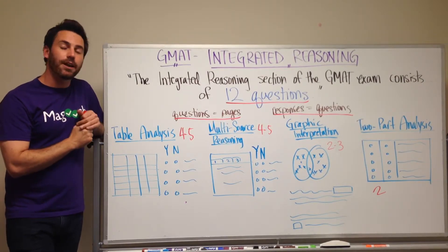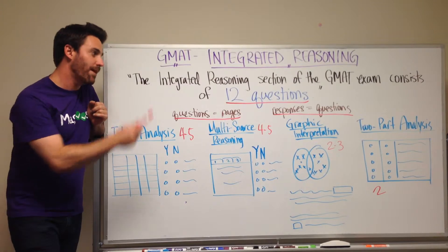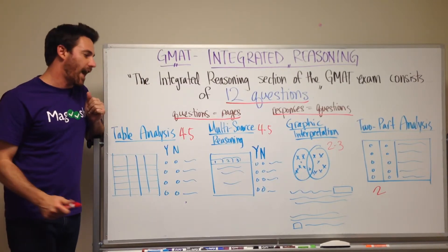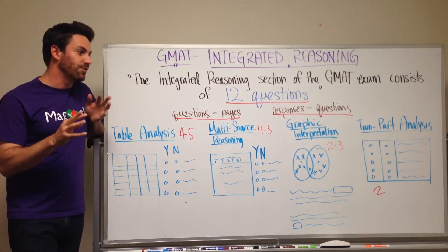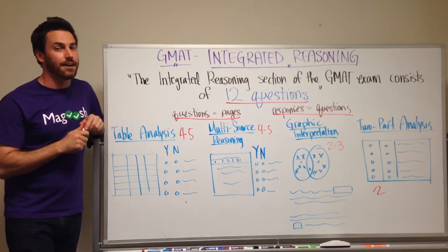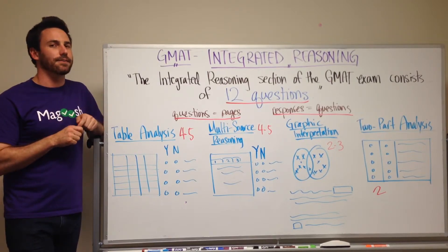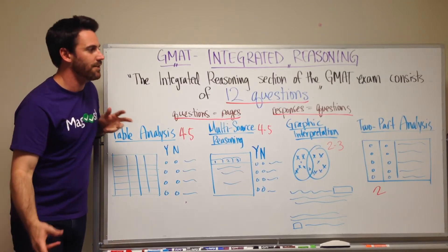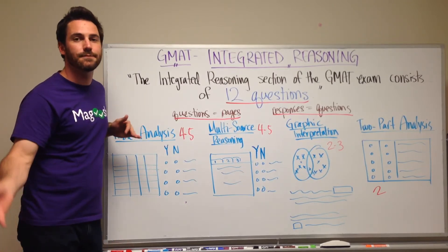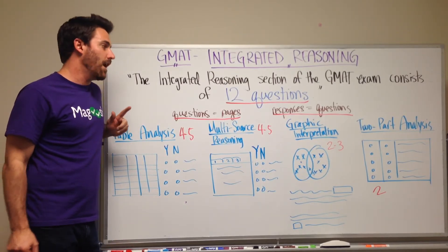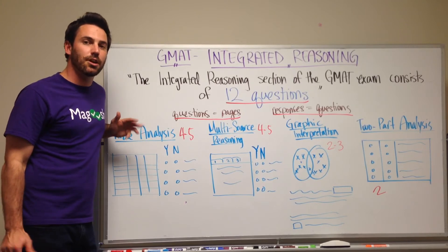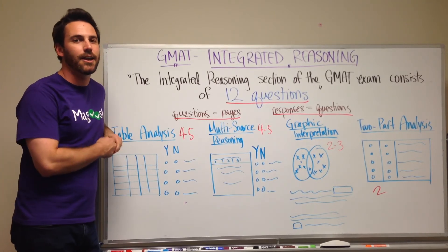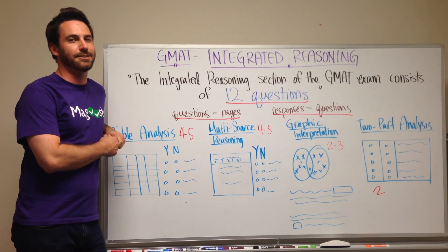So that's all I wanted to point out to you today. Remember, not 12 questions — 12 pages. You're actually going to have around 33 to 39 questions on the integrated reasoning section. If you have any other questions, feel free to leave a comment below the video, and head over to magoosh.com/gmat for more tips on how to be successful on the GMAT. Be excellent!